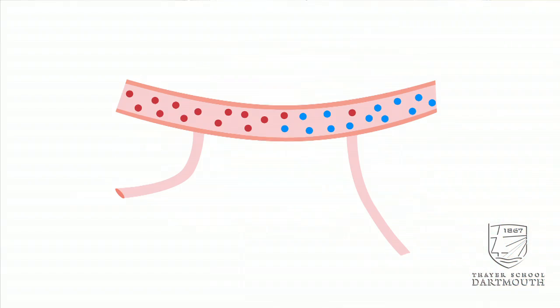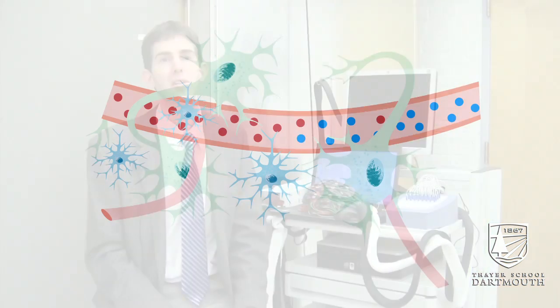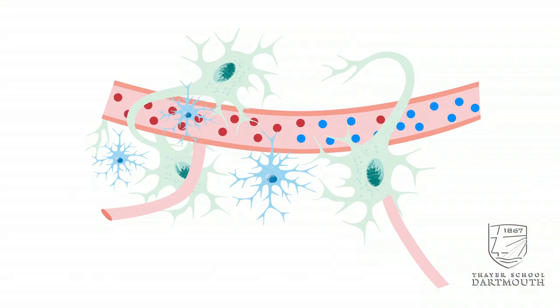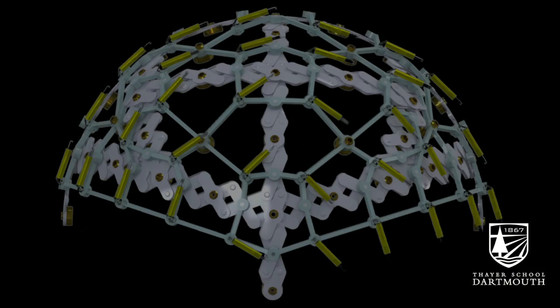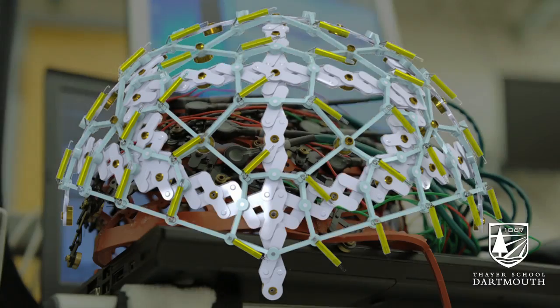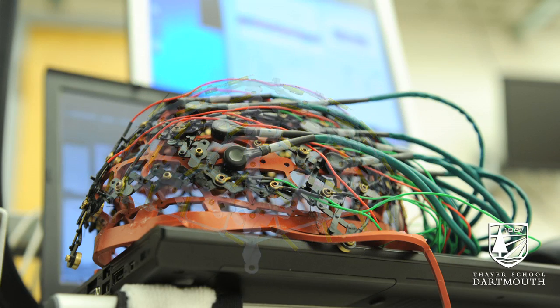Our approach is to measure changes in the dynamic relationship between neural activity and hemodynamic activity that are caused by the underlying disease pathology. We call this relationship neurovascular coupling. We measure neurovascular coupling with a non-invasive probe that simultaneously uses electroencephalography to measure neural dynamics and near-infrared spectroscopy to measure hemodynamic activity.